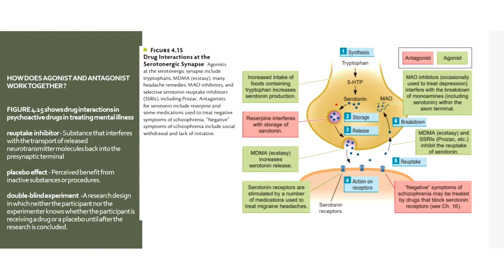A double-blind experiment is a research design in which neither the participant nor the experimenter knows whether the participant is receiving a drug or a placebo until after the research is concluded. In drug trials, one participant receives medication and another receives none, to test whether the medication is actually effective.